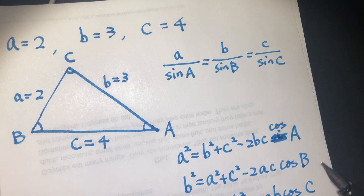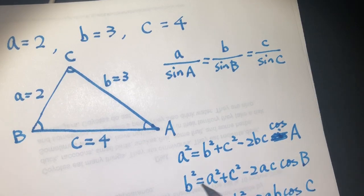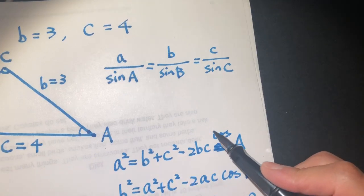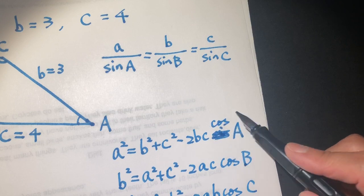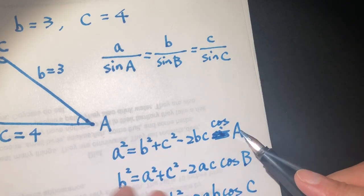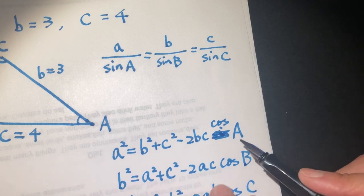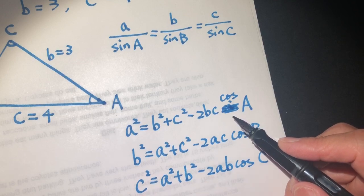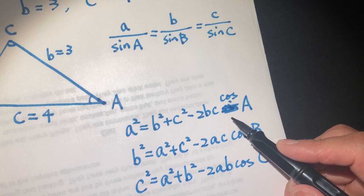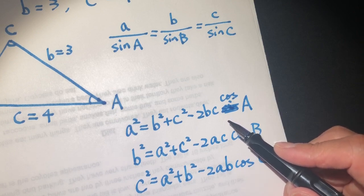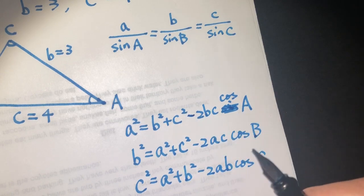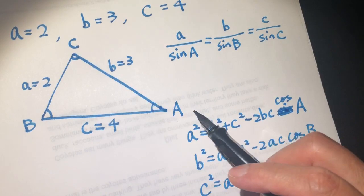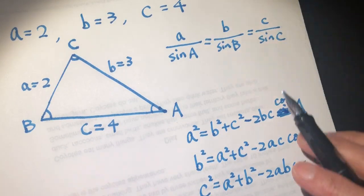So how about we solve this problem with the law of cosine? We know A is given, B is given, C is given — we only have one unknown variable. So we can solve this problem; we have everything here. It just needs some calculation, and a calculator will help. In this case, we can solve this problem through the law of cosine because we have enough known information.